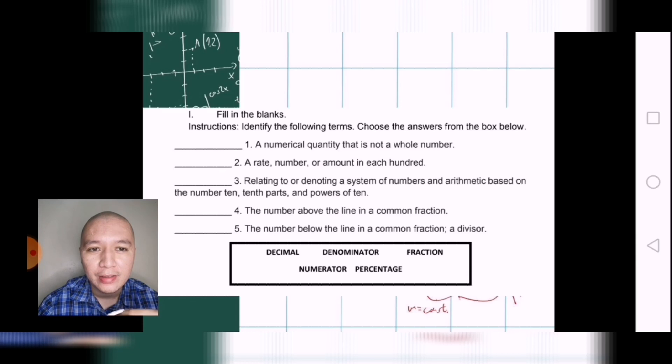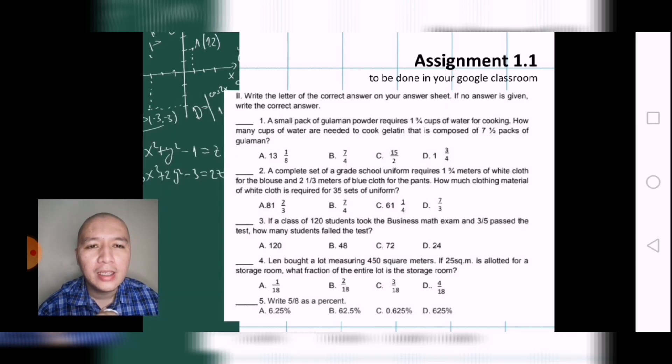So now let's test what we have learned so far. We have to fill in the blanks, answer some of the questions here. Alright, so here are the answers. And then 4 and 5 refers to the numerator and the denominator. The number above the line is a common fraction or numerator, and then the number below the line is the denominator. And this is an assignment that I will be leaving with you so that you can review the parts further before we expound further in Chapter 1.